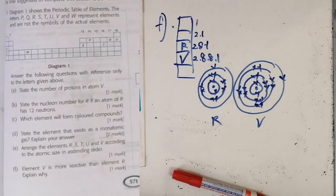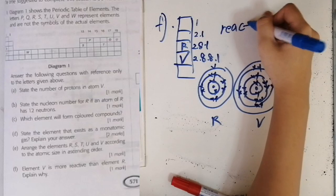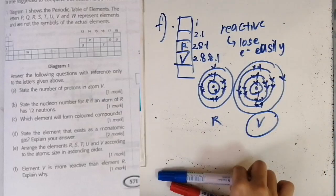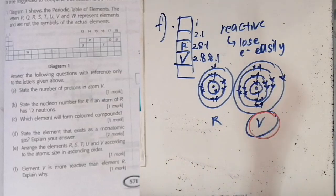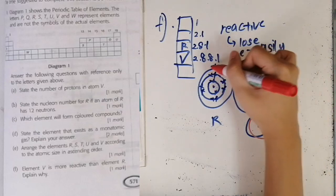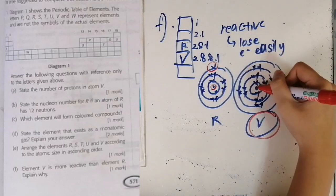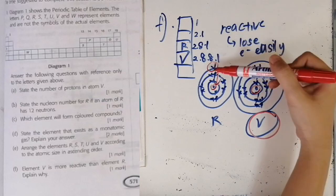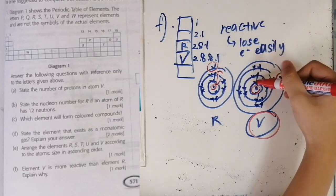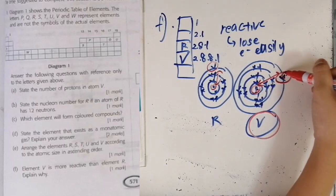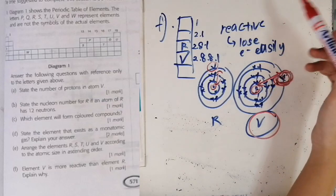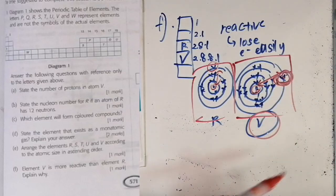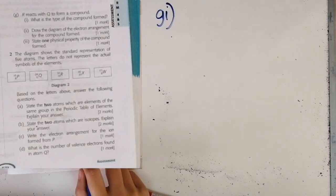An element is reactive when it can lose electrons easily. V is more reactive, meaning V can lose its valence electron more easily. Imagine the nucleus as a person in the middle — in R (2,8,1), the valence electron is closer to the nucleus, so it's held more tightly and harder to lose. In V (2,8,8,1), the valence electron is farther from the nucleus, so the attraction is weaker and the electron can be lost more easily. That is why V is more reactive.